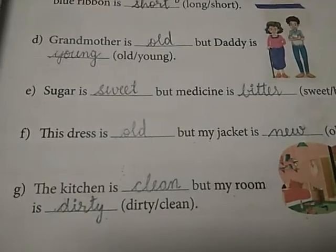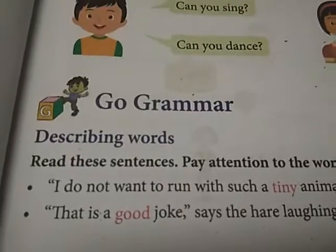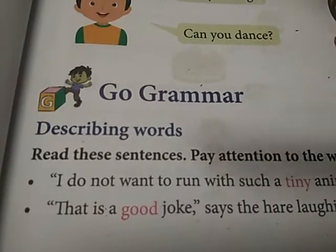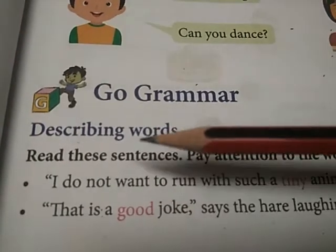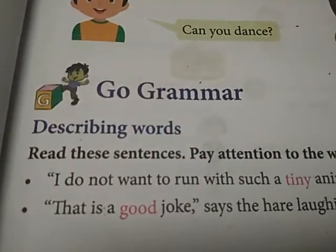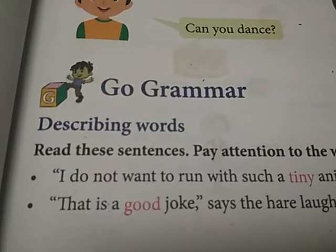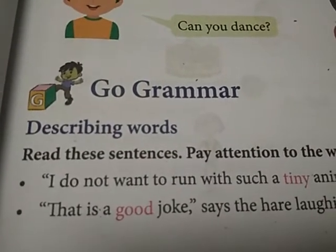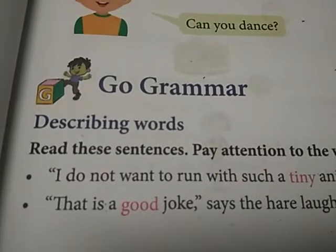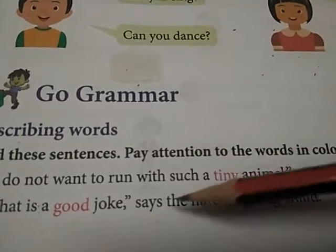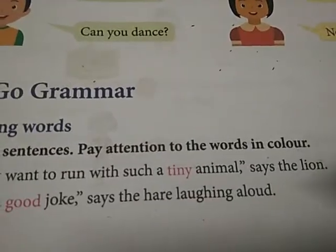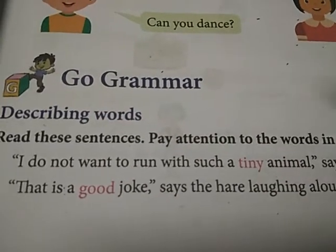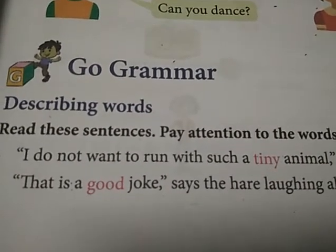Now turn the page. See, beta, in the grammar portion on page number 29 — describing words. Describing words are given to you. What is a describing word? We are going to study. Read these sentences. Ye sentences aap ko read karna hai. Pay attention to the words in color. Pay attention means hota hai dhyan dena.